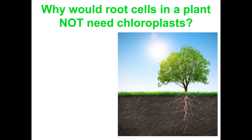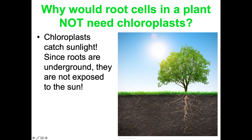Here's a question: why would root cells not need chloroplasts? Well, chloroplasts have thylakoid membrane containing chlorophyll — a pigment that captures sunlight to do photosynthesis. Root cells are underground and not exposed to the sun, so they can't do photosynthesis, and therefore they don't need chloroplasts.